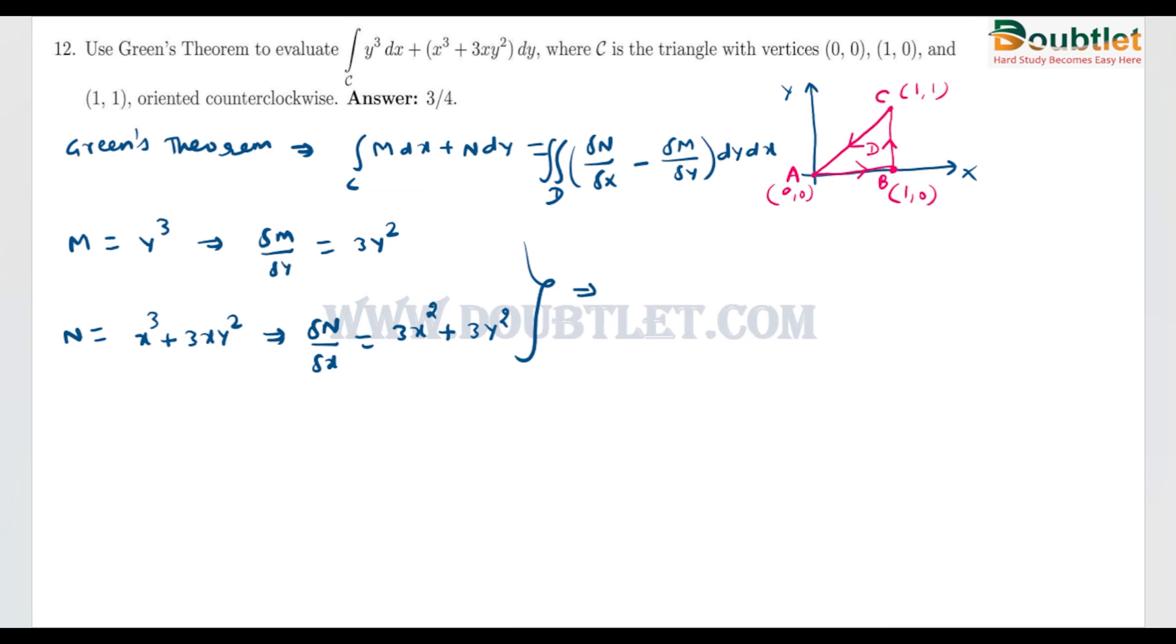From both, if we subtract ∂N/∂x minus ∂M/∂y, then this 3y² will be cancelled. We can write it here as 3x² plus 3y² minus 3y². This whole term will be cancelled, so it will be equal to 3x².